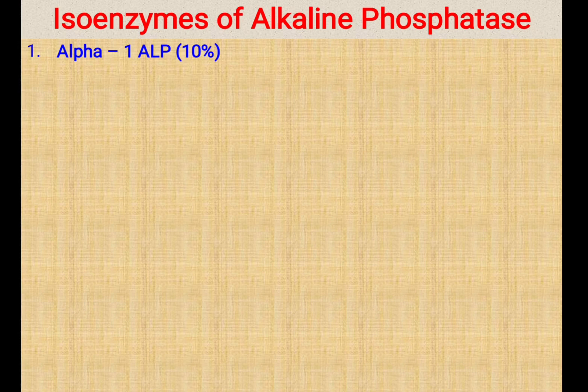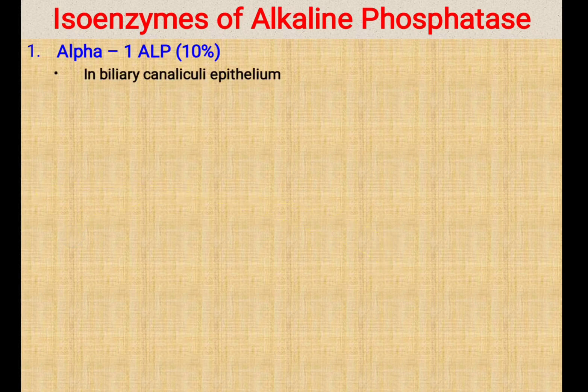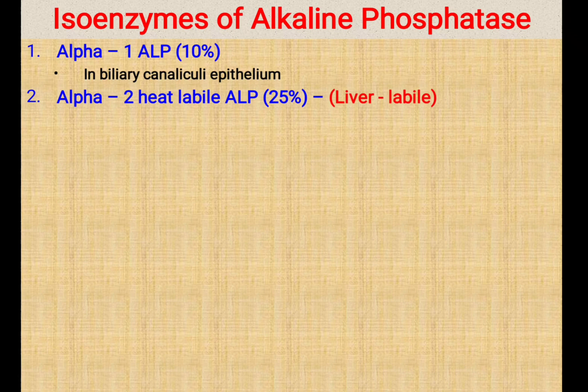These six isoenzymes are produced by different organs or tissues. The first one is Alpha-1 ALP. Out of the total isoenzymes, 10% of this alkaline phosphatase is the Alpha-1 variety and it is produced by the biliary canalicular epithelium. Whenever there is damage or injury to the biliary system, this Alpha-1 ALP level is increased, which represents 10% of the total alkaline phosphatase level in the blood.